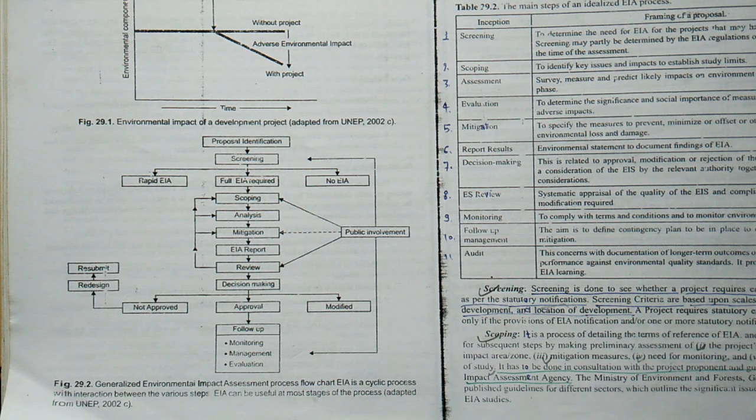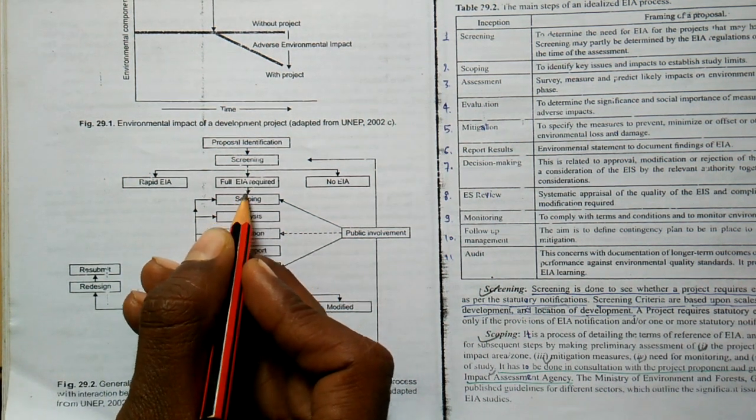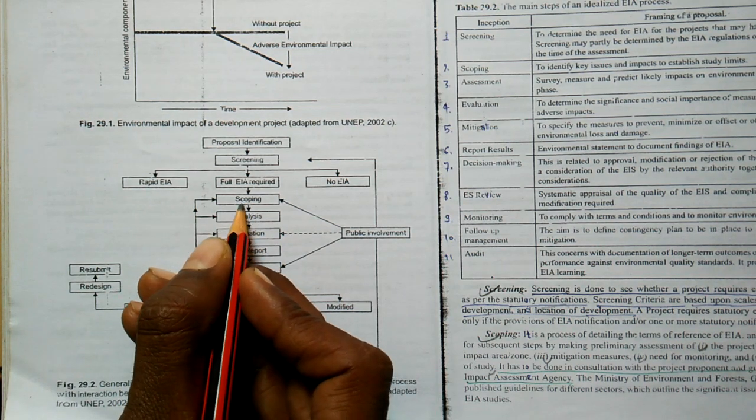Friends, as I have already discussed, the steps are: the first step is proposal identification, the second is screening. Screening can be full EIA required, or no EIA, or rapid EIA. After the screening step, if the requirement is full EIA, another step you can see.